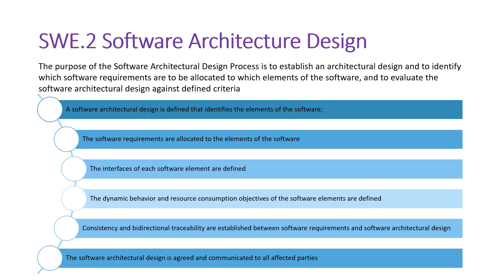Then we define the interfaces of each software element. The next step is to define the dynamic behavior and resource consumption objectives of the software elements. We must also ensure consistency and bidirectional traceability between software requirements and software architecture design, and ensure that the software architecture design is agreed upon and communicated to the affected parties.